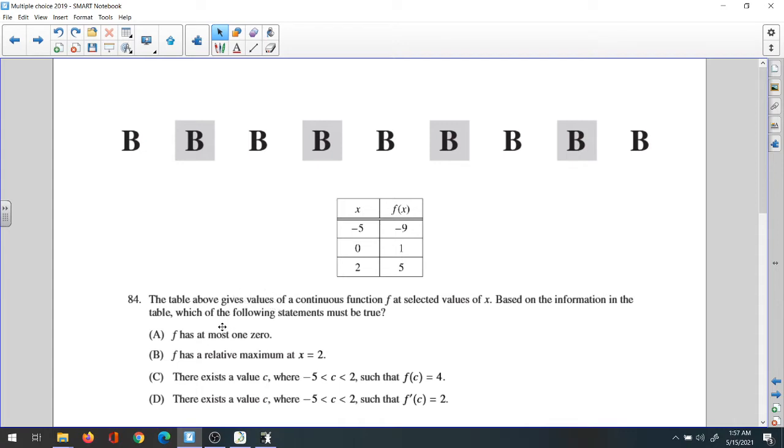Option B: f has a relative maximum at x equals 2. If we find the derivative at 2, it would be greater than zero. The derivative at 2 would be greater than zero, so we could say it doesn't have a relative maximum.